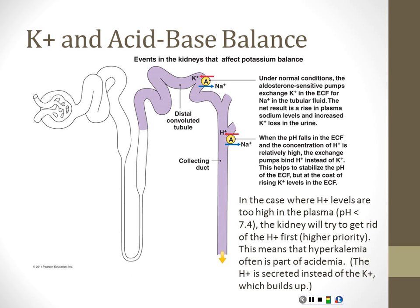This is an example of the body, or evolution, selecting for the most problematic thing first. The bigger problem for the organism is too high a hydrogen ion concentration — a pH that's too low. That's going to kill you fastest. Too low or too high potassium will also get you, but acidosis gets you earlier.